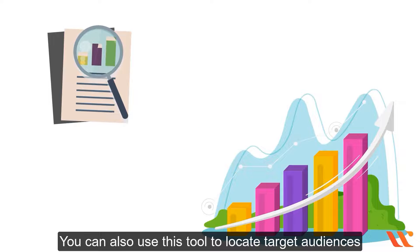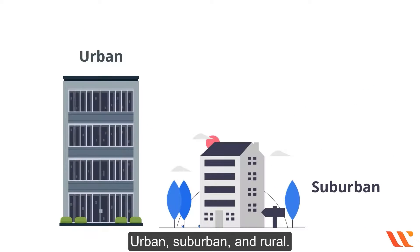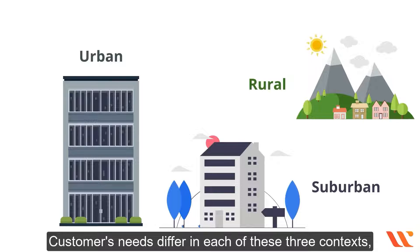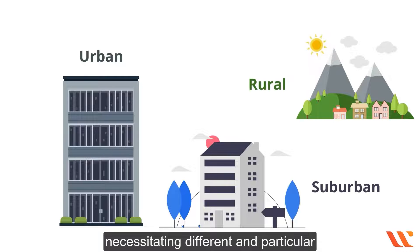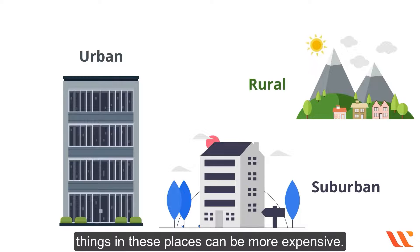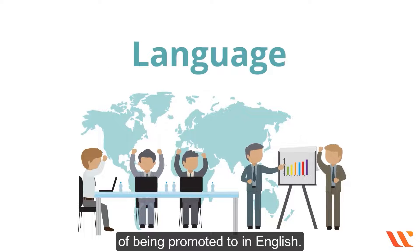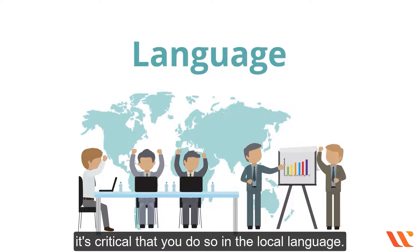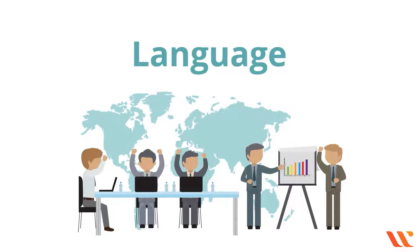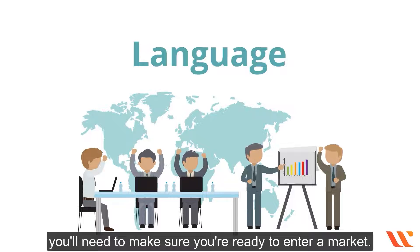You can also use population data to locate target audiences by overlaying demographic data. Customers' needs differ across urban, suburban, and rural contexts, necessitating different marketing methods in each. Because people in cities and suburbs have more purchasing power than those in rural areas, products in these places can be more expensive. Language is another parameter — not every country can or should be promoted to in English. If you're running a marketing campaign, it's critical to do so in the local language, and you'll need to ensure you're ready to enter a market if all marketing messages need to be modified.